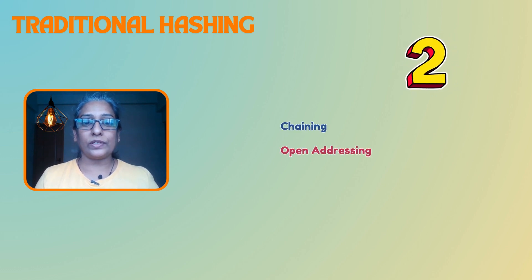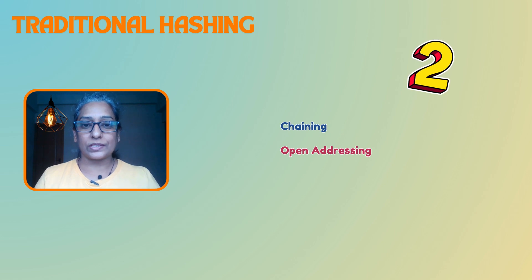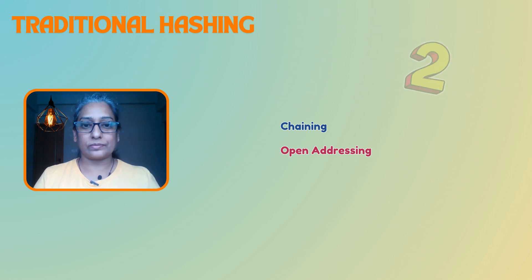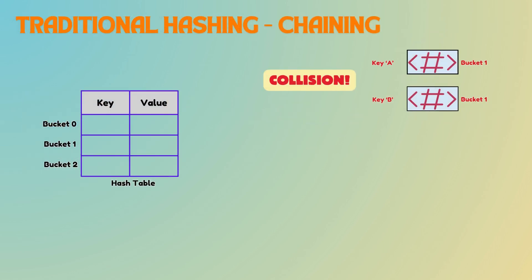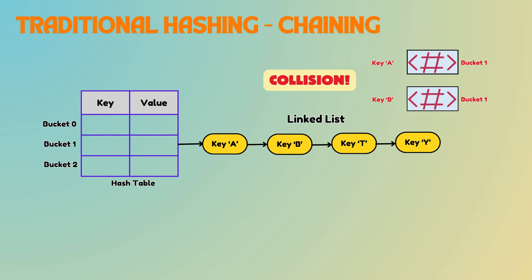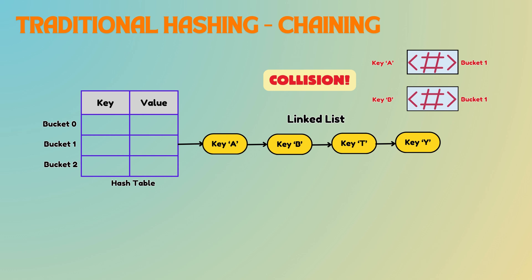Chaining and open addressing are two different techniques used to resolve collisions in hash tables. In chaining, if multiple elements are mapped to the same bucket, they are stored in a linked list. In the worst case, all elements could hash to the same bucket, creating a long chain that must be traversed linearly, resulting in O(n) lookup time.